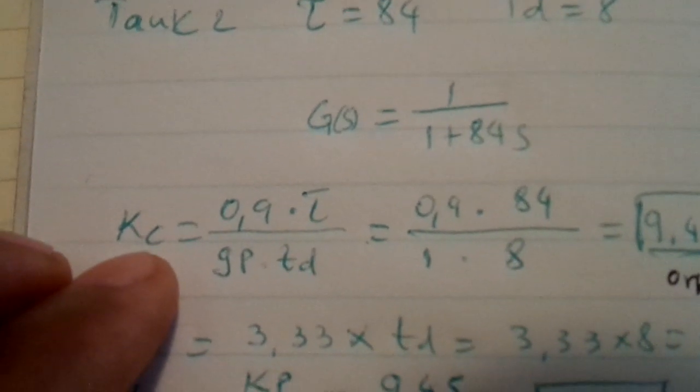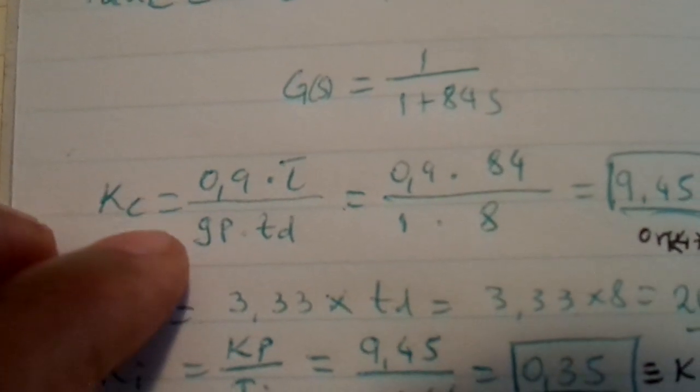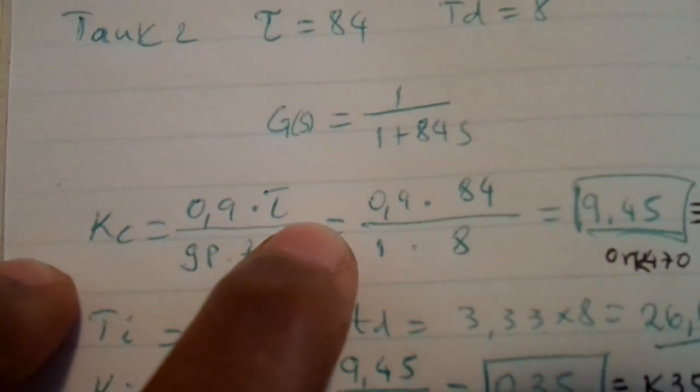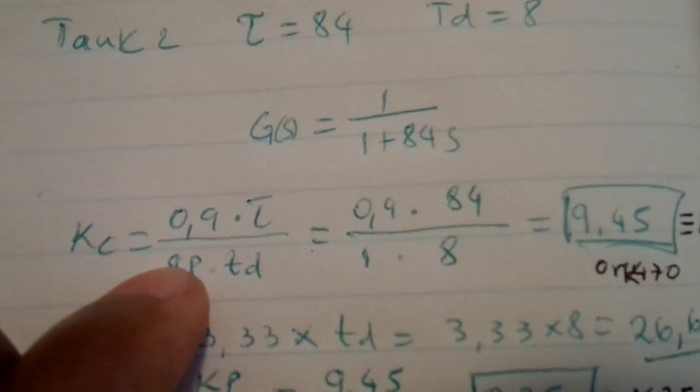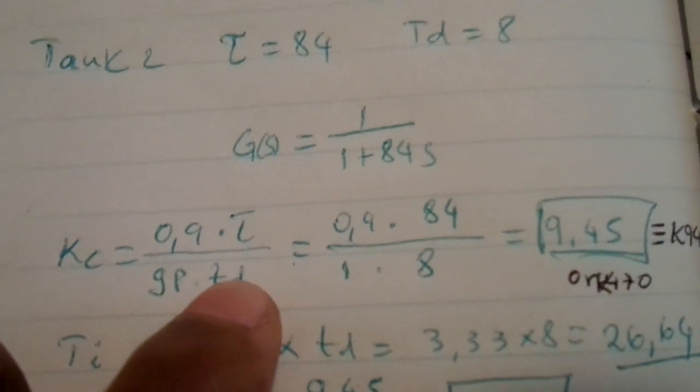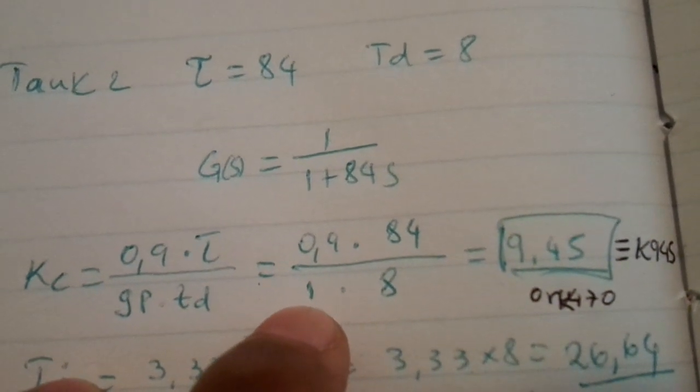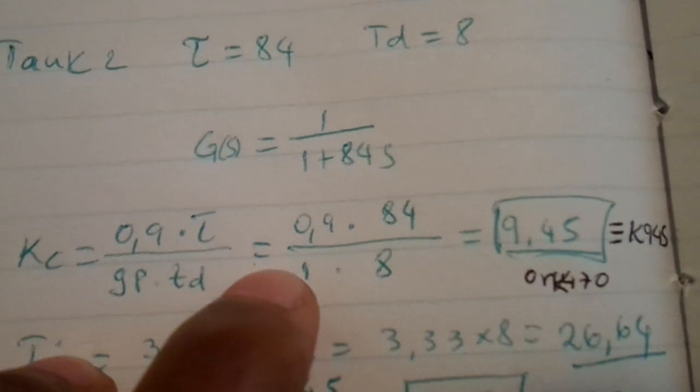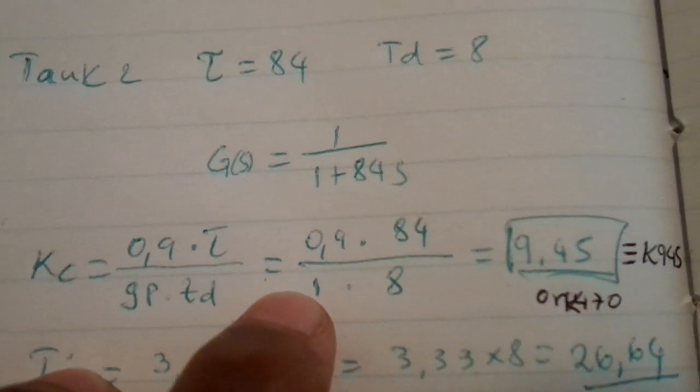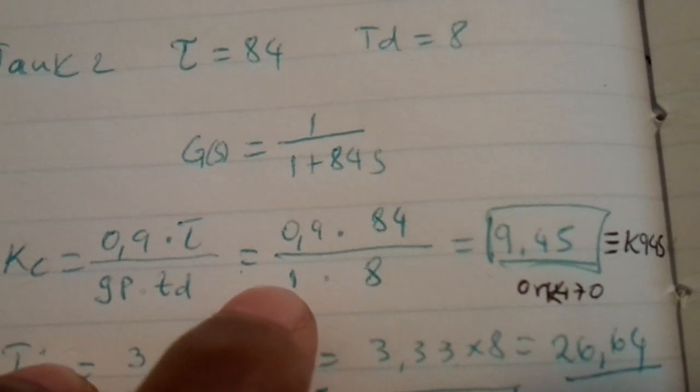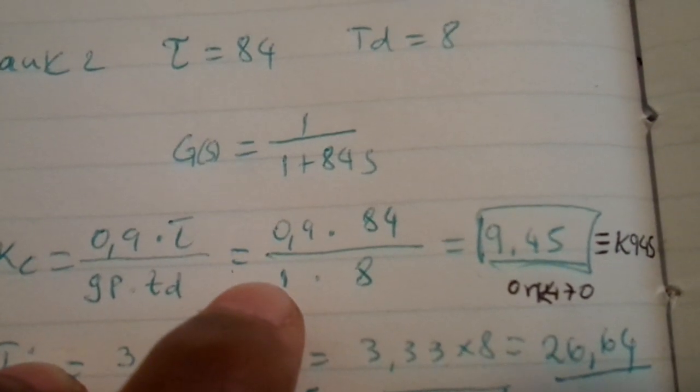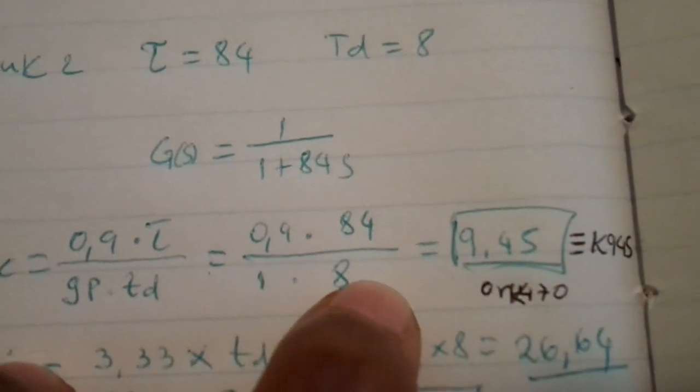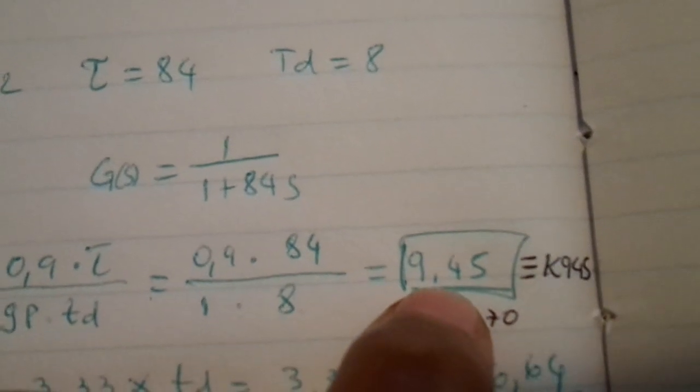So now using Ziegler-Nichols for open loop, the controller gain will be 0.9 times the time constant over my plant gain times the time delay. My plant gain is one. I didn't specifically mention those calculations on that Word document, but it's one. I can provide you with this document if you're interested. So 0.9 times 84 over 1 times 8, which is the time delay, and I got 9.45.